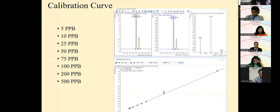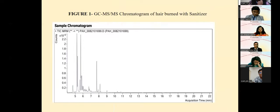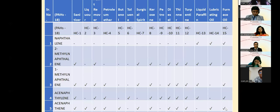Both qualitative and quantitative analyses were performed. For quantitative analysis, an 8-point calibration curve was prepared at concentrations of 5, 10, 25, 50, 75, 100, 200, and 500 ppb. The mixture contains 18 PAHs; one calibration curve is presented here as a representative example, with similar curves obtained for the remaining 17 PAHs. A GC-MS/MS chromatogram for hair burned with sanitizer is shown, and similarly obtained for the rest of the ignitable liquids. Today only qualitative data will be presented.